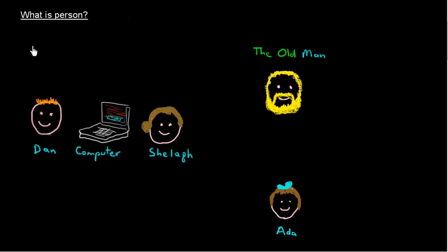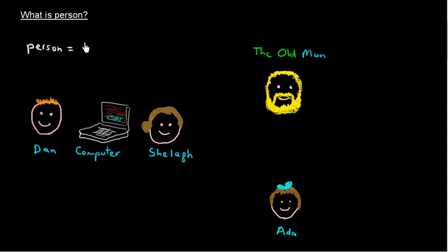What is person? Person is a characteristic of some words which describes their relation to the production of a sentence. And when I say production of a sentence, I mean either speaking or writing a sentence. And person can have one of three states: it can either be first person, second person, or third person.